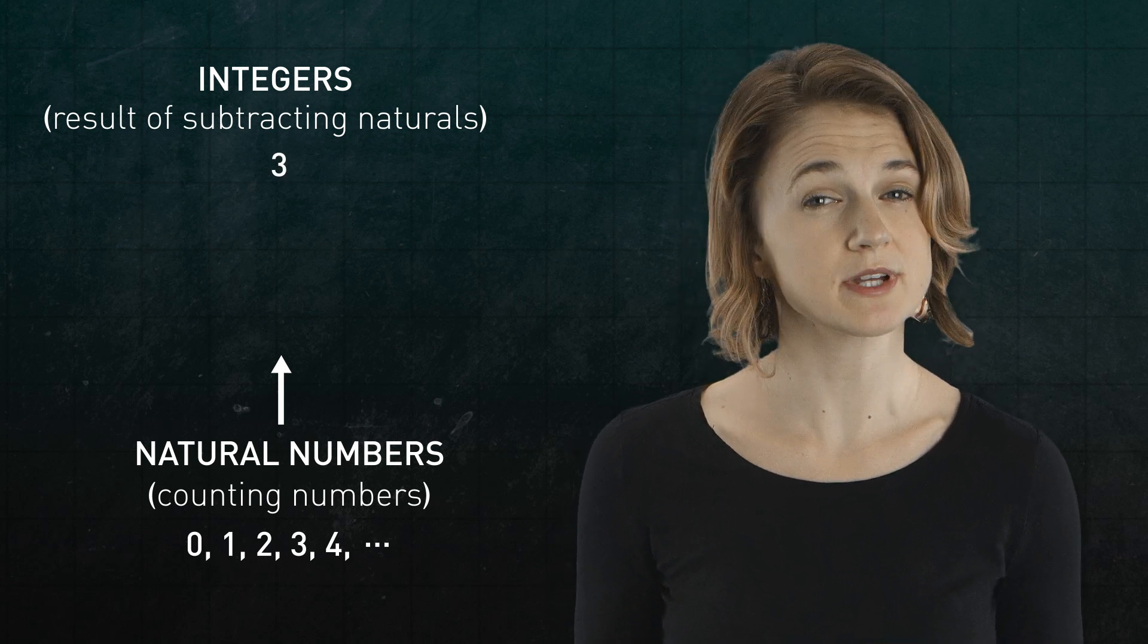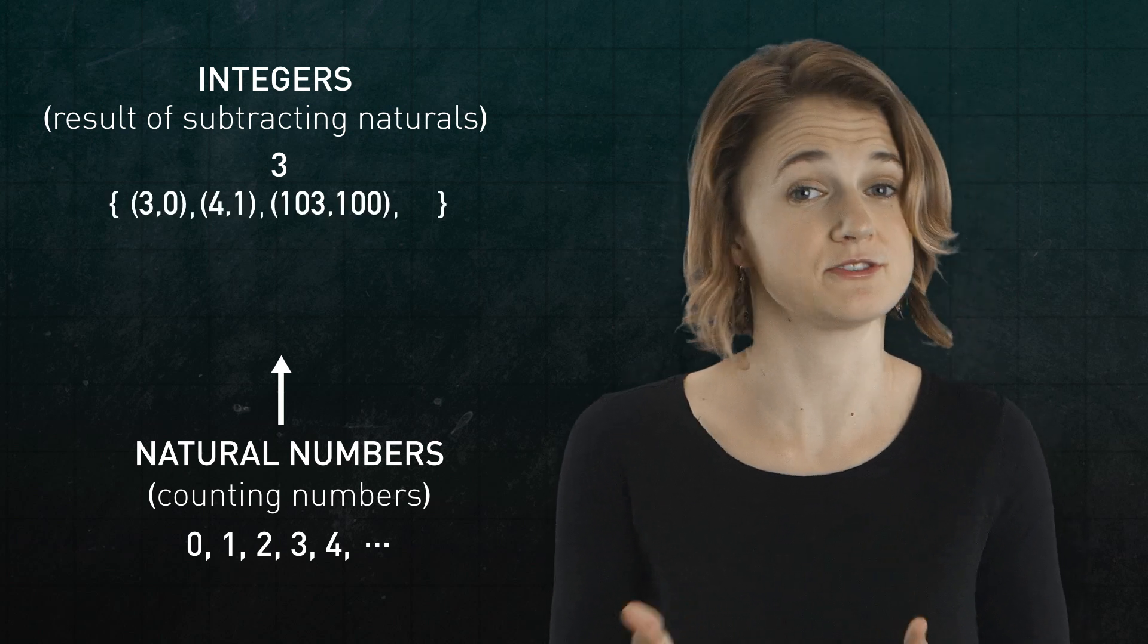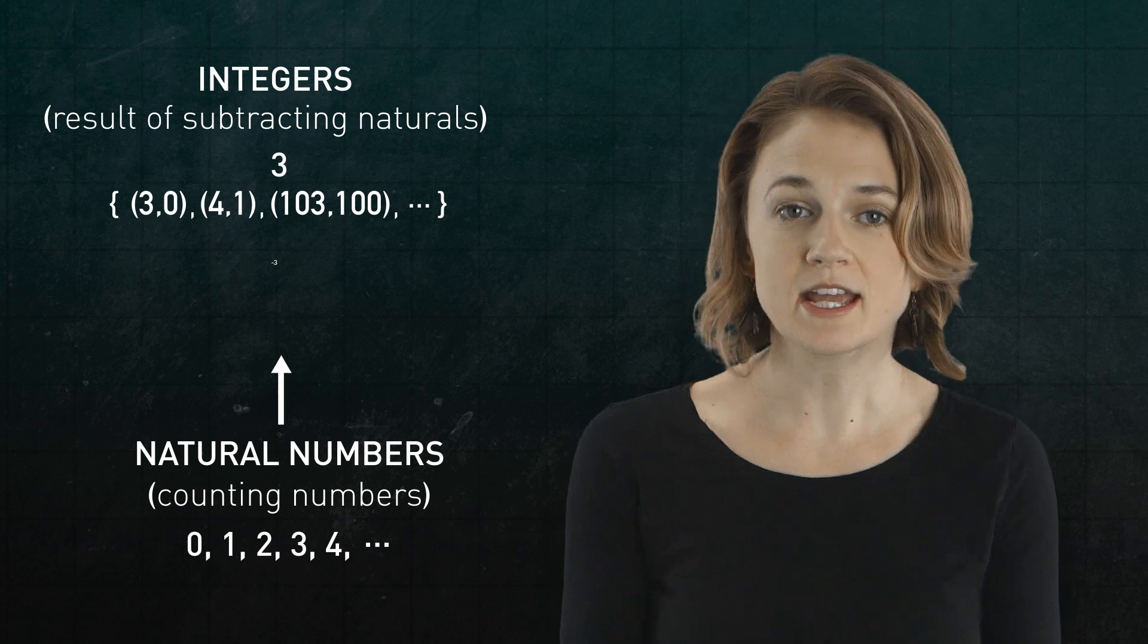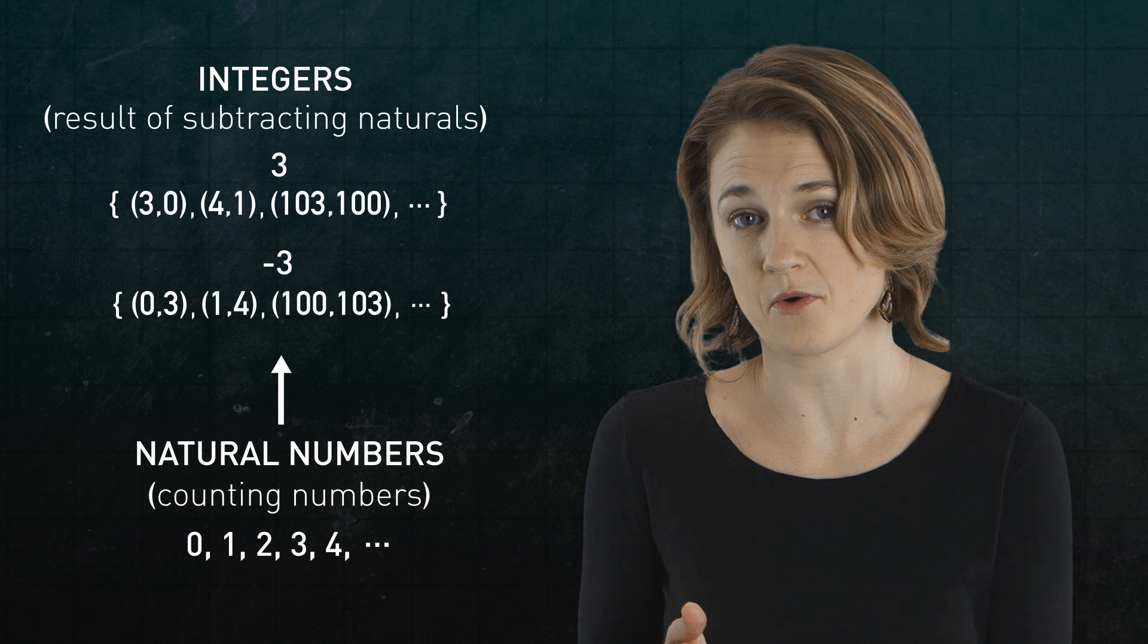For example, the integer three is the collection (3, 0), (4, 1), (103, 100), and so on. And the integer negative three is the collection (0, 3), (1, 4), (100, 103), and so on.